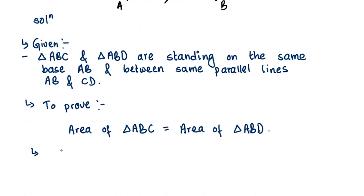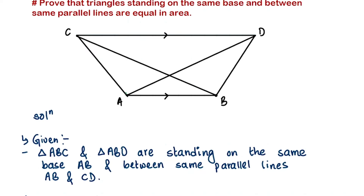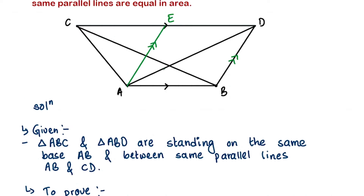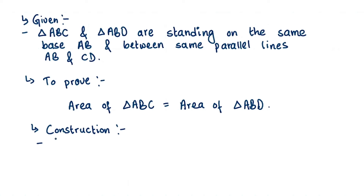The third step is we need to make a construction in this proof. What we are going to construct is a line from point A such that it is parallel to line BD. So we have our line AE parallel to BD. Let's name this new point E. In our construction: draw AE parallel to BD.